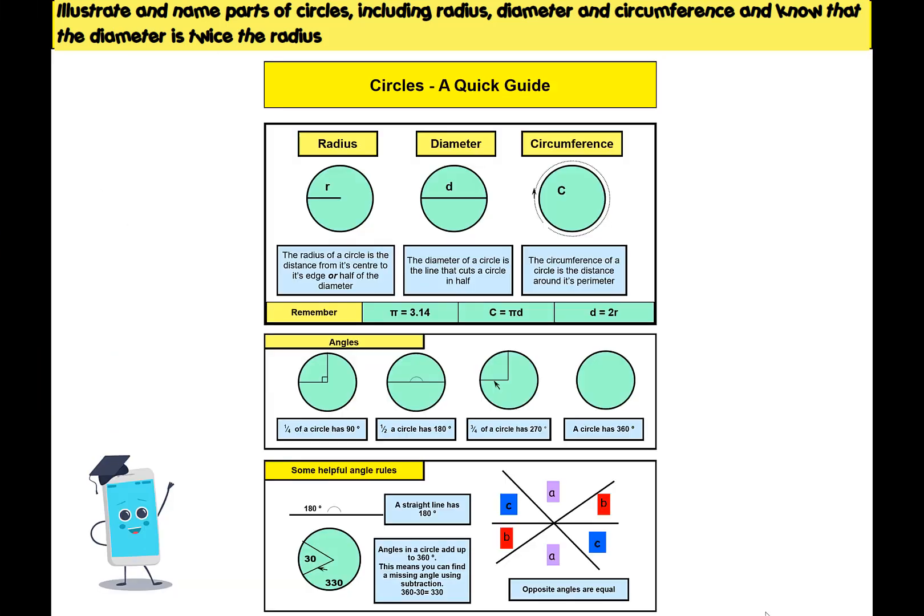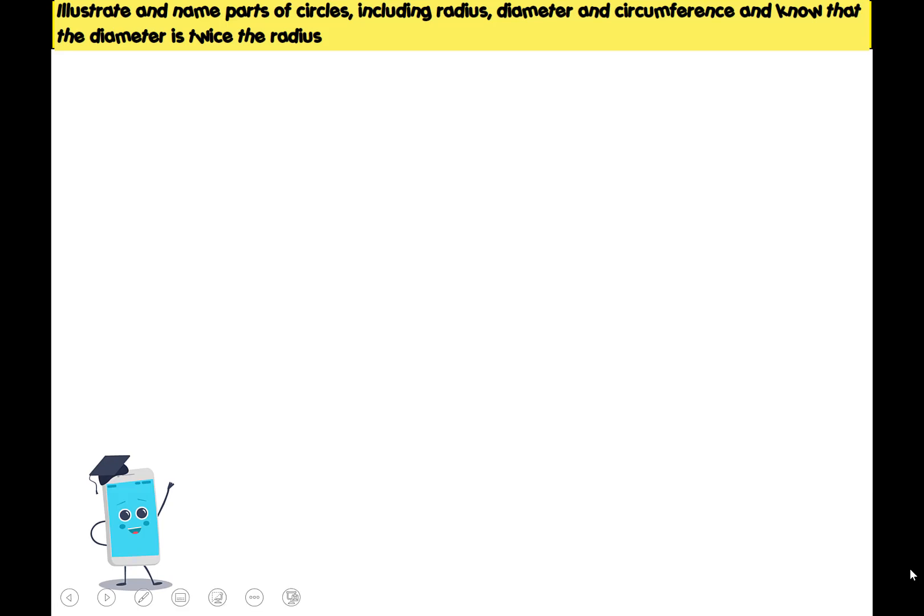The first thing you could do is print off the circles quick guide. This will be in the resources section on your app, and it's very useful and really important that you try and study it. This is not something that you'll just learn in year six and then not come across again. This will carry on all the way up to your GCSEs, so it's going to give you a really good foundation for understanding circles.